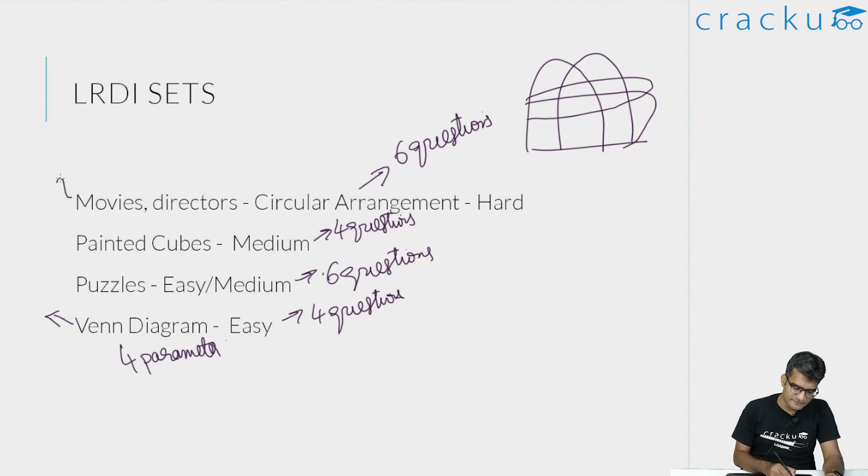Second, I attempted the arrangement set, the first arrangement set which had movies. Third, I went with the puzzles which was the other arrangement set. And I did not attempt the painted cube set. Now painted cubes also, if you are first discussing the four-set LRDI, painted cubes, again if you know the theory about how painted cubes should be answered, you will definitely get this question correct. I did not know it because of which I did not actually attempt this. But if you want to get better at painted cubes, we already have a video which was taken by Syli which explains how you should approach painted cubes. So definitely watch it and it is going to help you quite a lot.